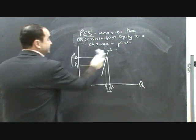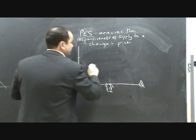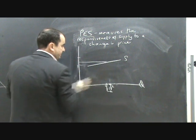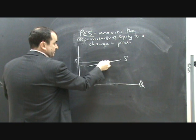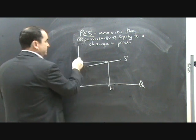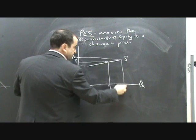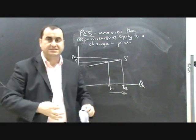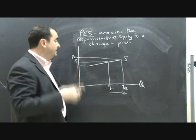On the other hand, a supply curve which is more shallow would show that supply is far more responsive. When price rises from P1 to P2, the quantity massively increases. Supply is much more reactive or responsive to the price rise, and this would indicate elastic supply.